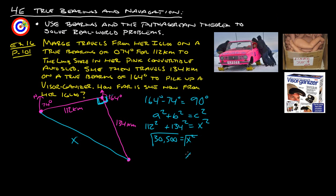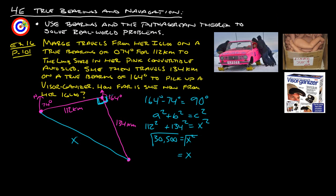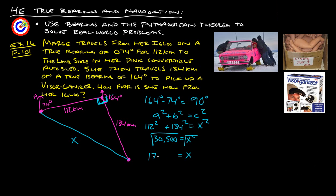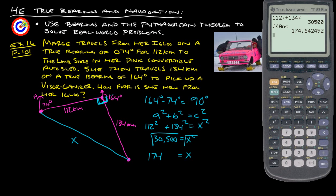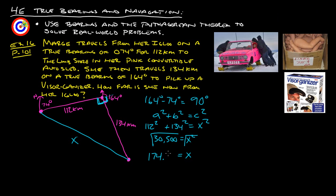We now want to square root both of those. We get X equals, we're going to square root our answer. We get that she is about 174.6 kilometers away from her igloo. Marge is about 174.6 kilometers away from her igloo.